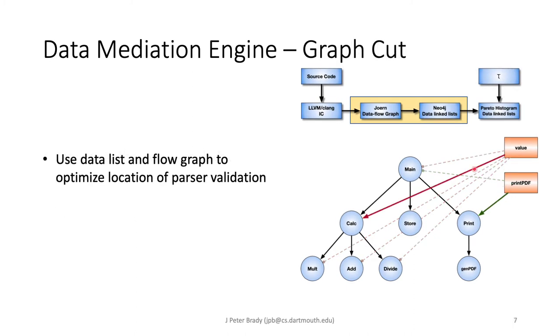Once we have this information we can use the data list and the flow graph to optimize the location of our parser validation. So for example value here we can decide that we will do our validation at the calc phase while the print PDF variable we can do at the print phase.